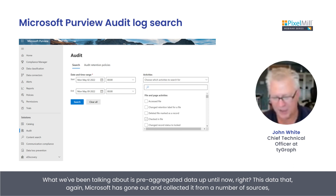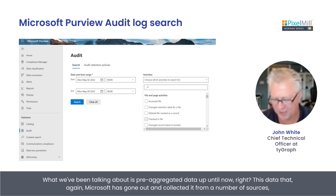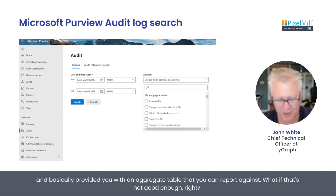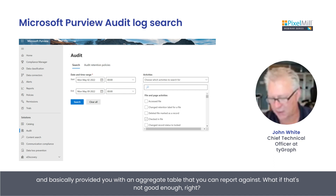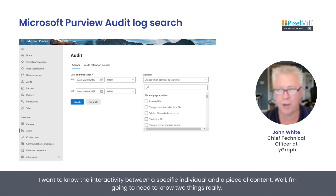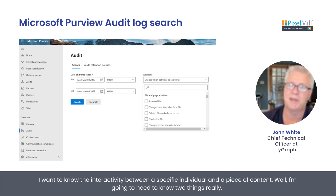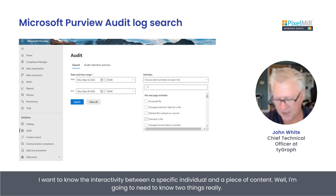What we've been talking about is pre-aggregated data up until now. This is data that Microsoft has gone out and collected from a number of sources and basically provided you with an aggregate table that you can report against. What if that's not good enough? I want to know the interactivity between a specific individual and a piece of content.